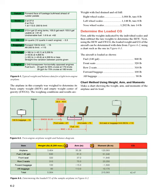The airplane in this example was weighed to determine its basic empty weight (EW) and empty weight center of gravity (EWCG). The weighing conditions and results are: weight with fuel drained and oil full — right wheel scales: 1,084 pounds, tare 8 pounds; left wheel scales: 1,148 pounds, tare 8 pounds; nose wheel scales: 1,202 pounds, tare 14 pounds. To determine the loaded CG, add the weights indicated by the individual scales and then subtract the tare weights to determine the EW.